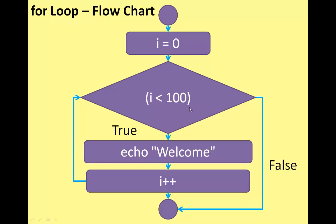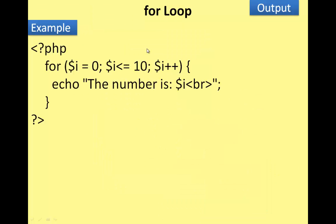Then the loop exits. For example, printing 'welcome' 100 times: first, i is zero; condition is checked — true continues, false exits. This is the flow chart for the for loop.